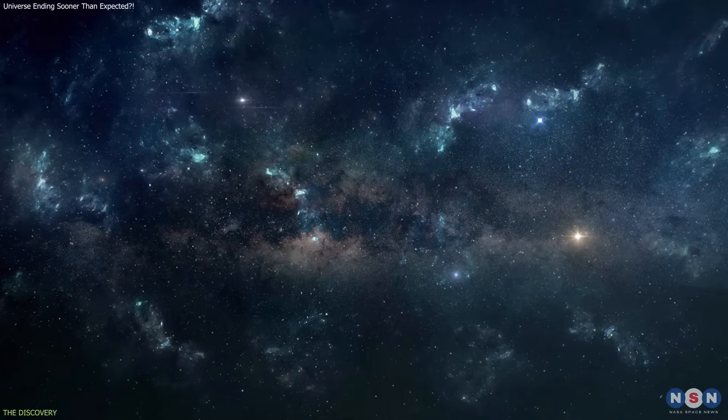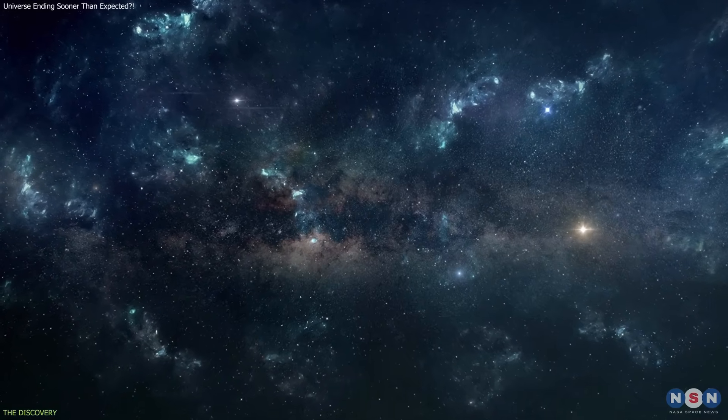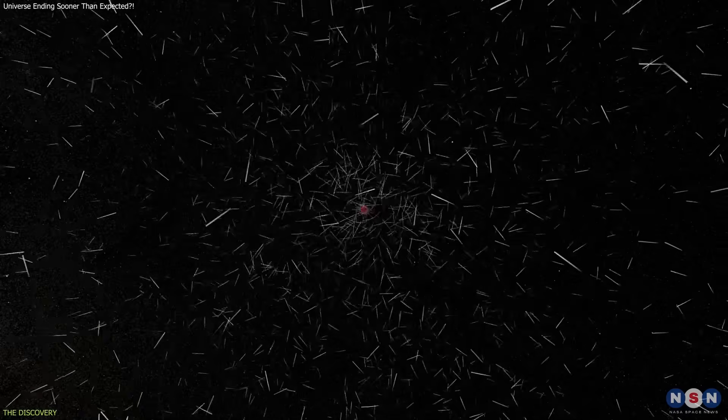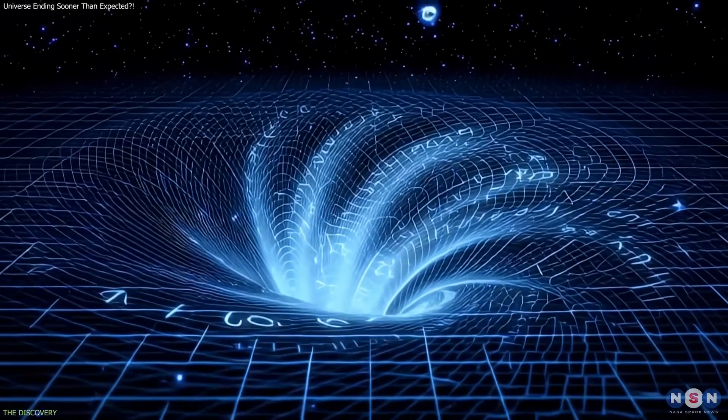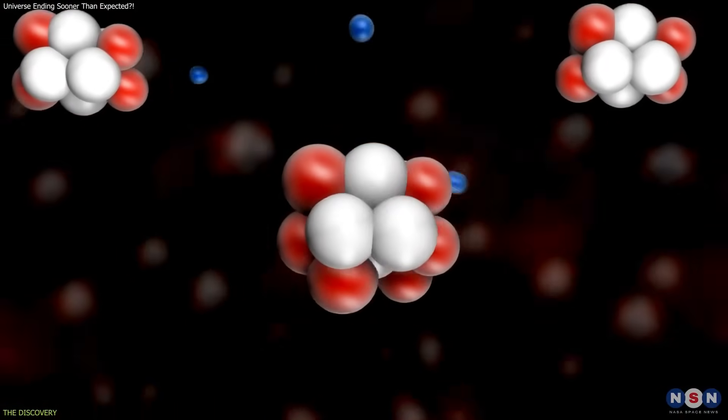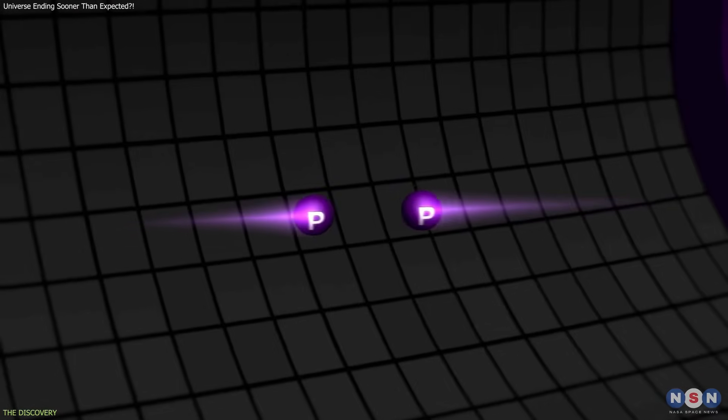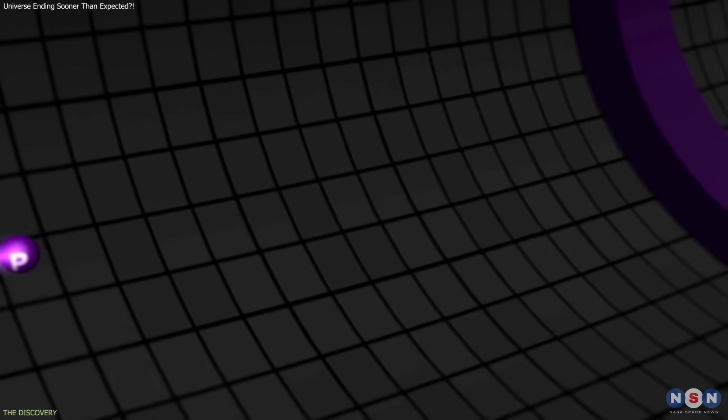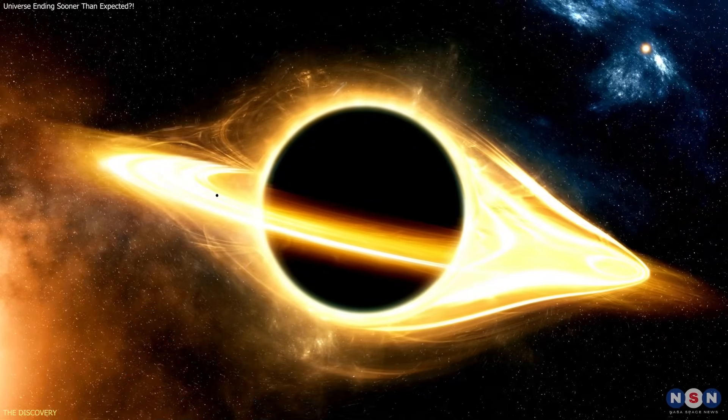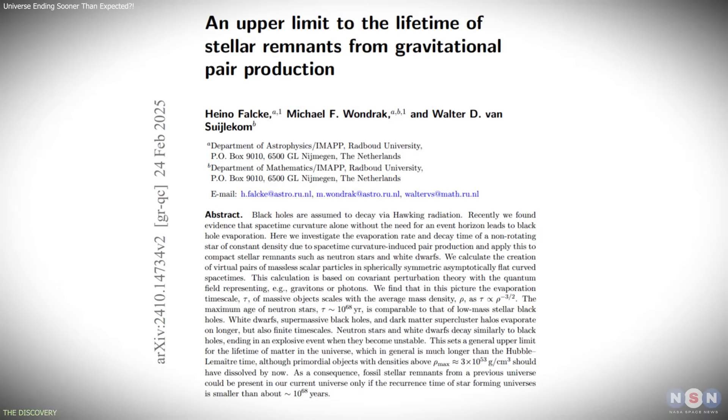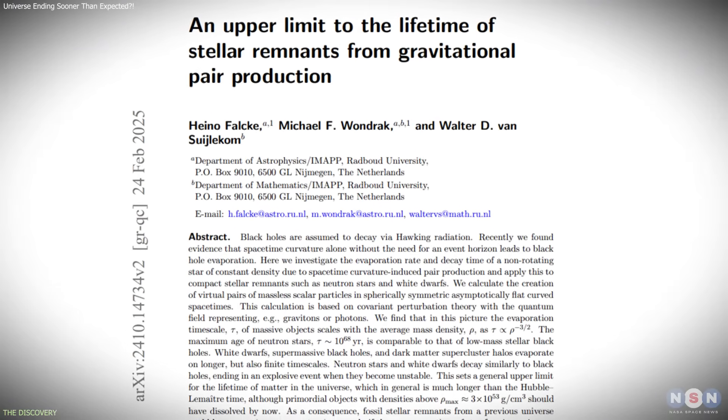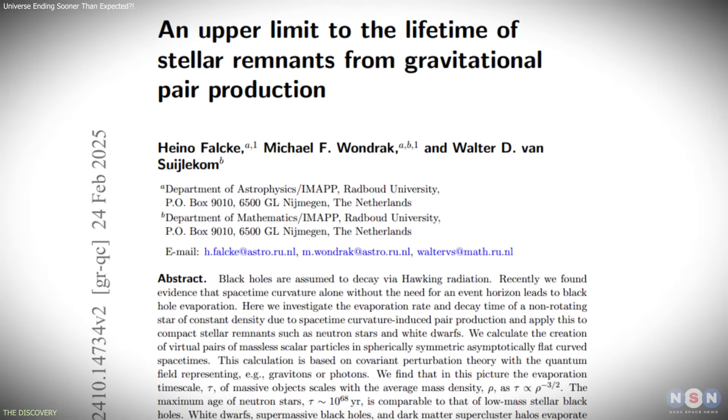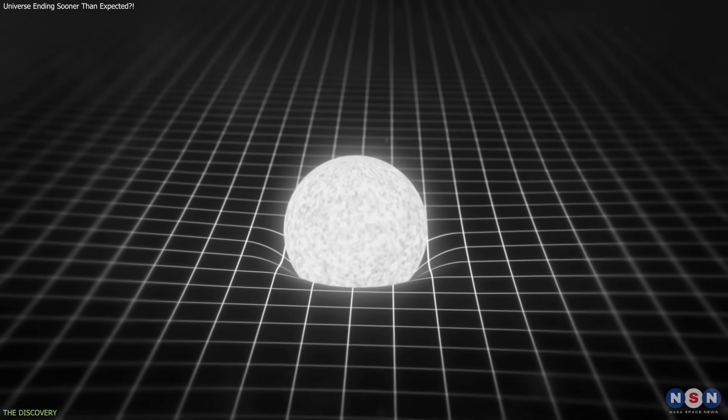According to quantum field theory, empty space is never completely empty. Virtual particles continuously emerge in pairs, annihilate, and disappear. Near strongly curved spacetime, however, these pairs can separate before annihilation. When this happens, both particles become real and carry away energy. This process is commonly associated with black holes, but the new calculations show it is not exclusive to event horizons. Intense curvature alone is sufficient.